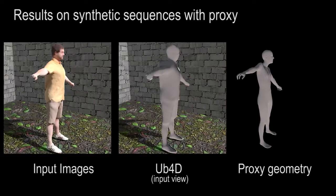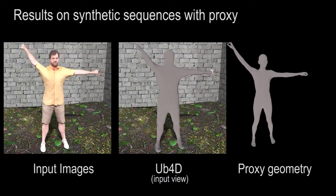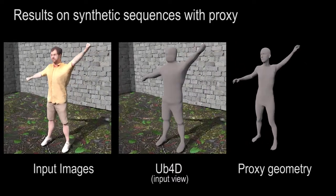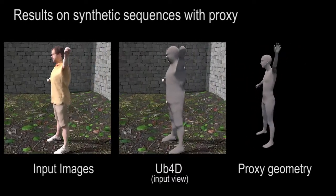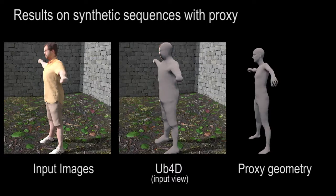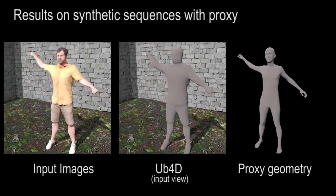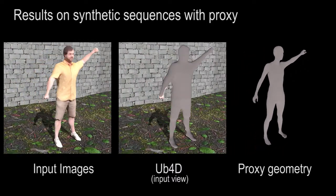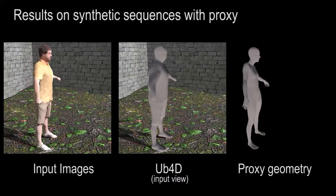This is again validated on a scene where a human is translating along a large baseline while moving his arms. On the right, we visualize the coarse-shaped prior, or geometric proxy, provided to the proposed scene flow loss.